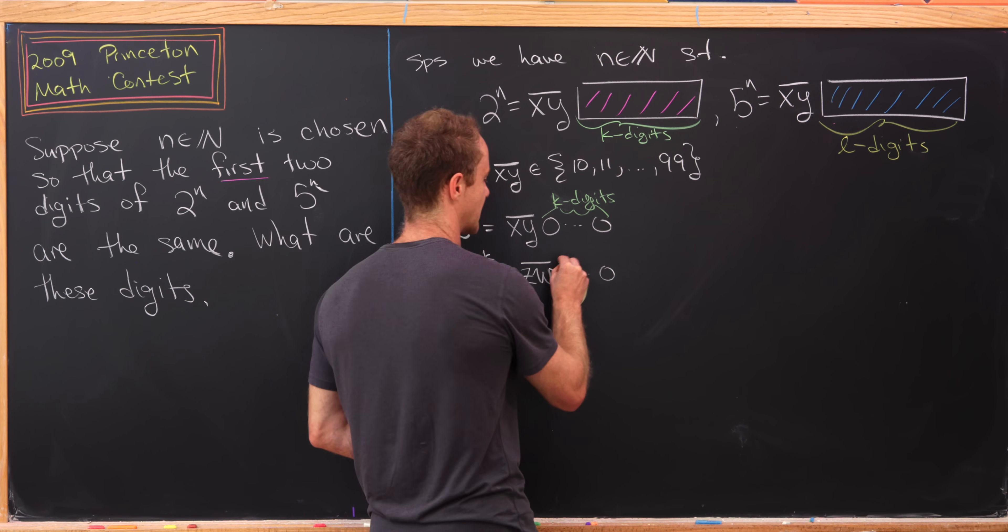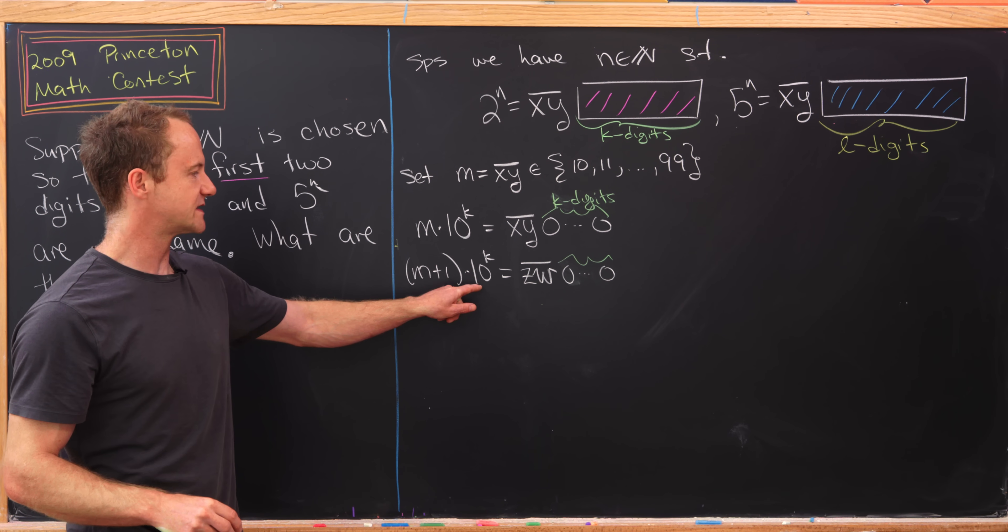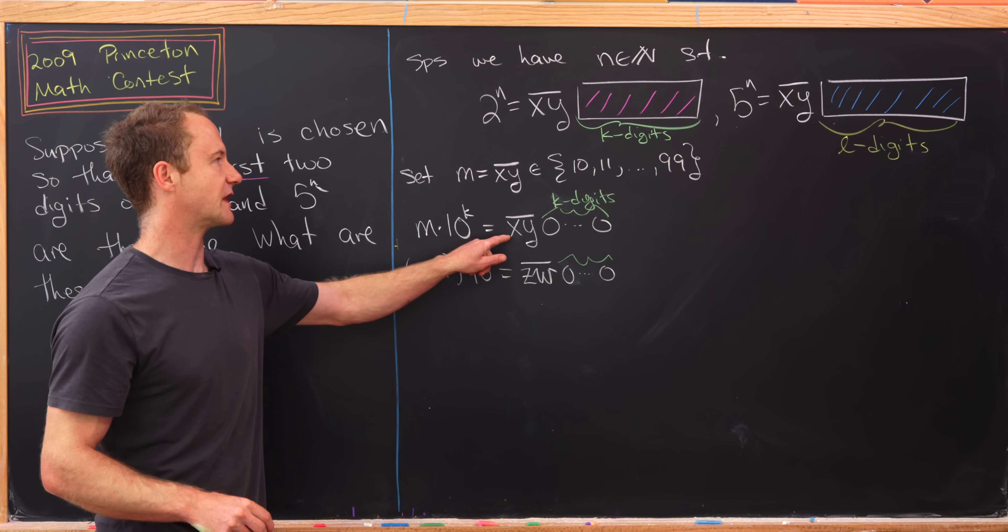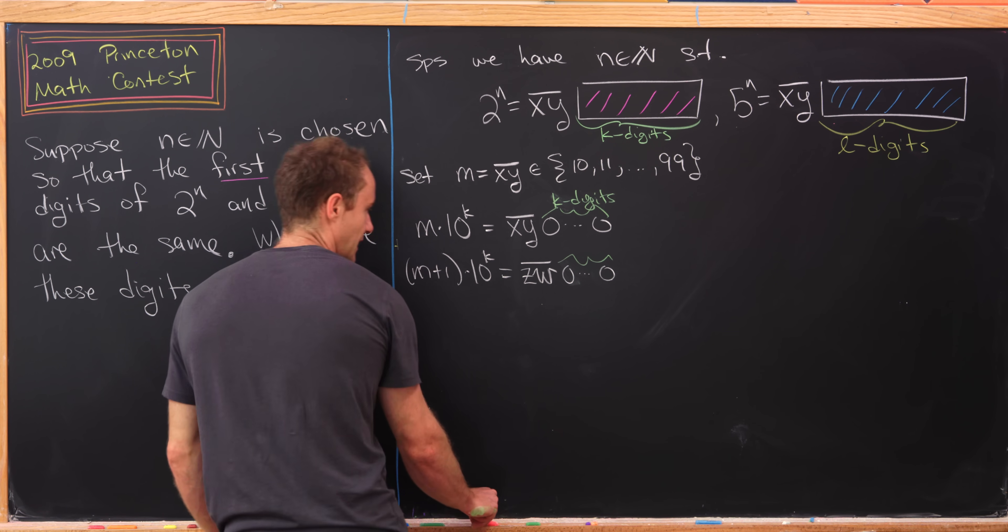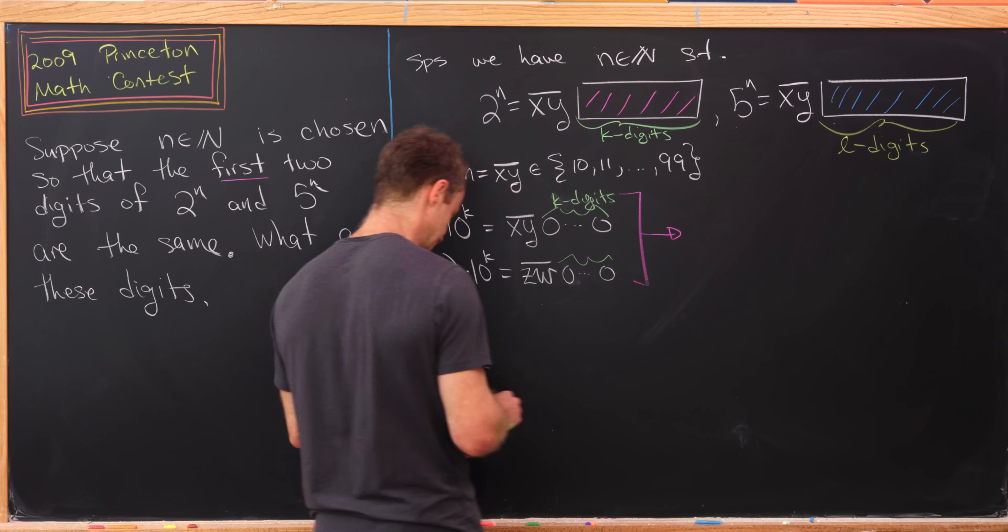Importantly, this (m+1) times 10^k, since zw is strictly bigger than xy, will be strictly bigger than 2^n. That means we can sandwich our 2^n between these two.